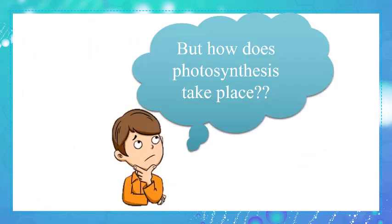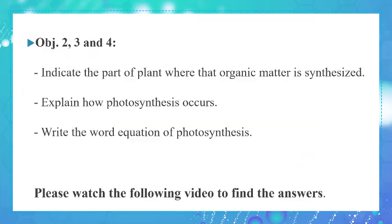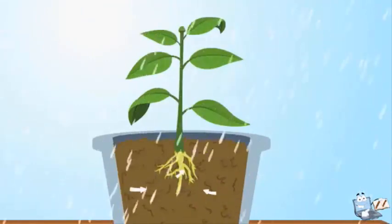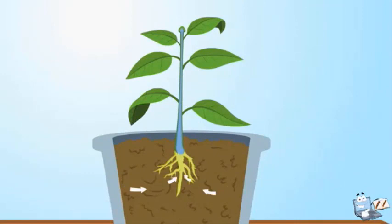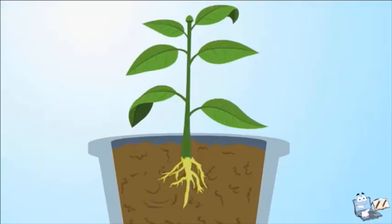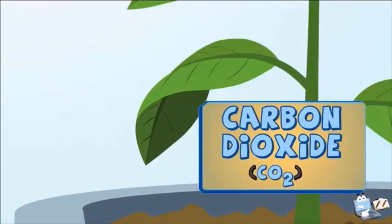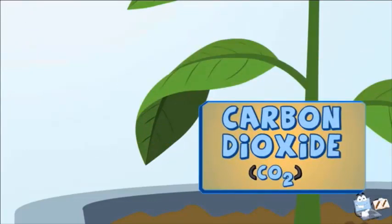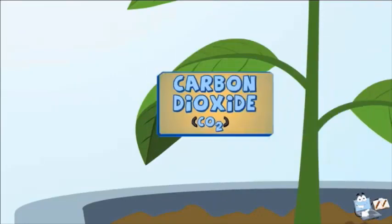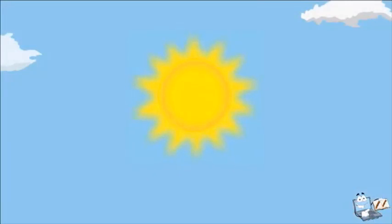But how does photosynthesis take place? In order to cover these objectives we have to watch the following video. The plants take in water from the soil through its roots. These tubes help in bringing water and minerals from the soil to its leaves. Leaves breathe in carbon dioxide from tiny pores called stomata, which are on the underside of the leaf. The stomata are like windows in a room because they allow air to get in. And here comes the sun, one more important factor for photosynthesis.